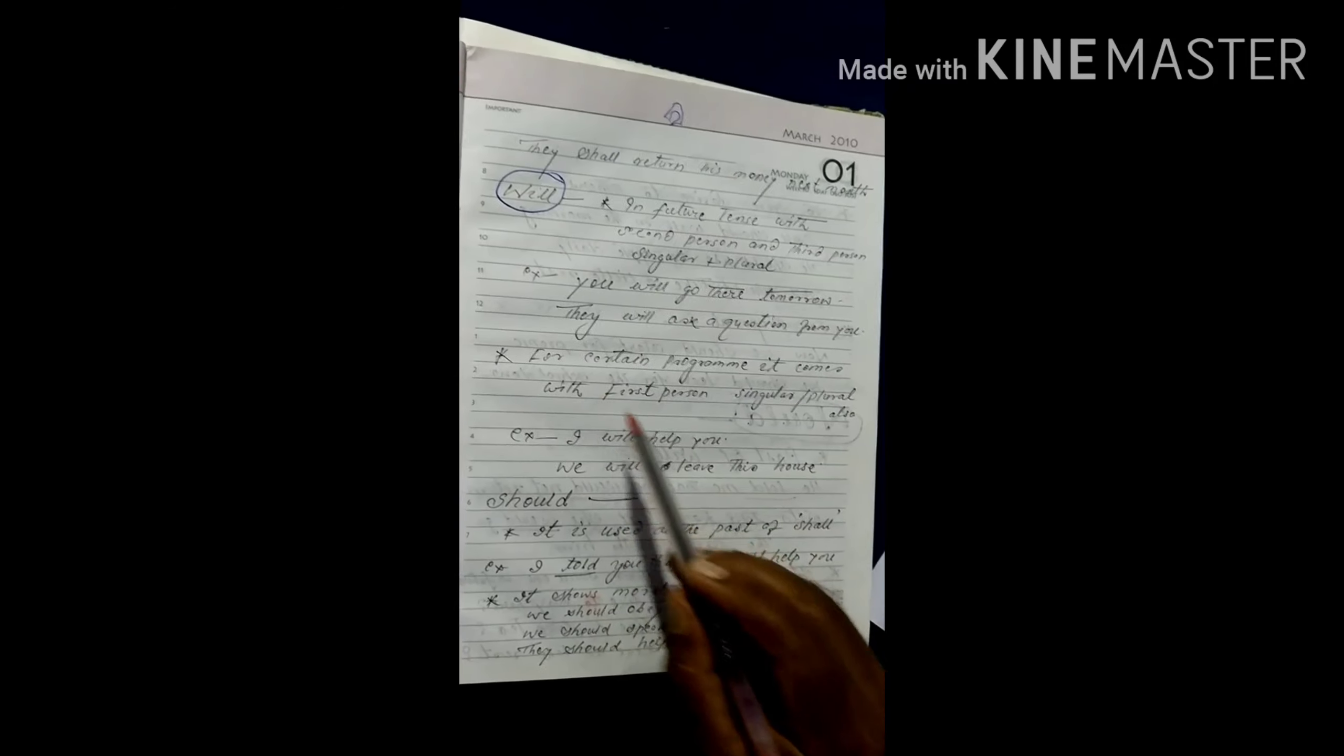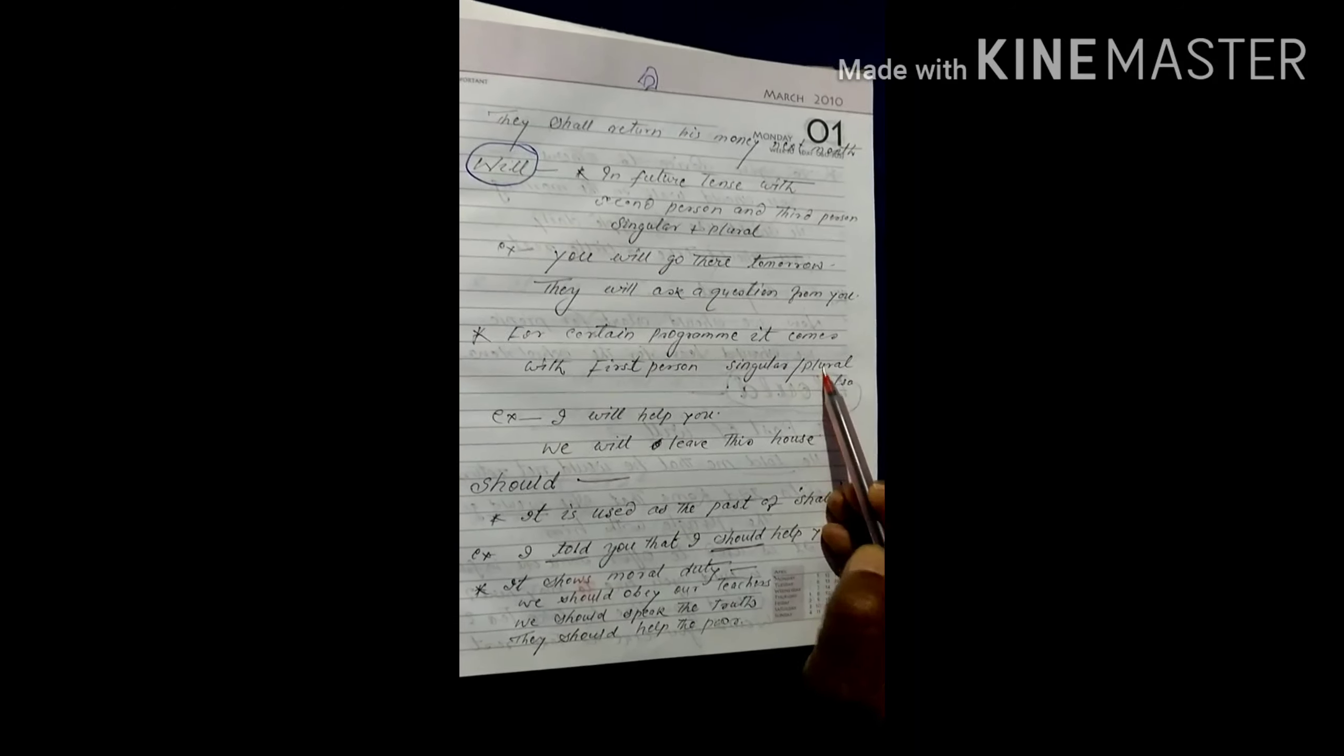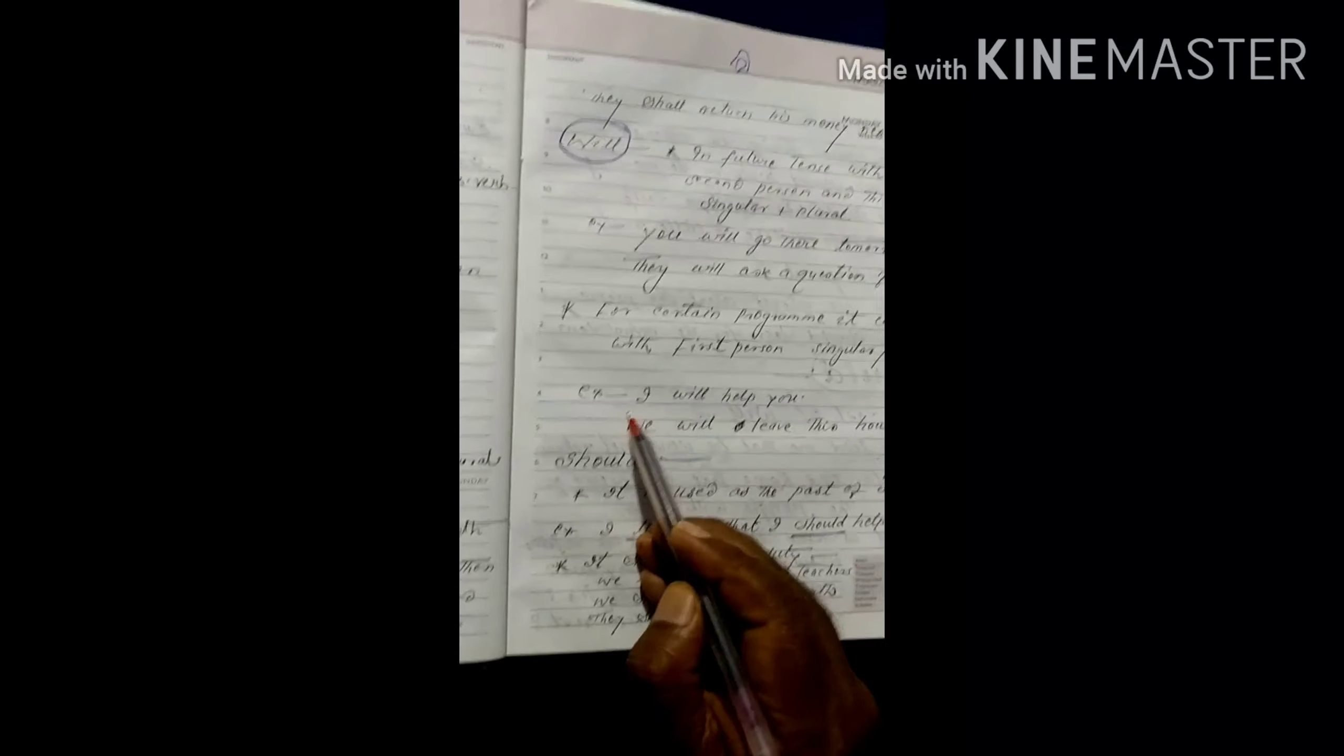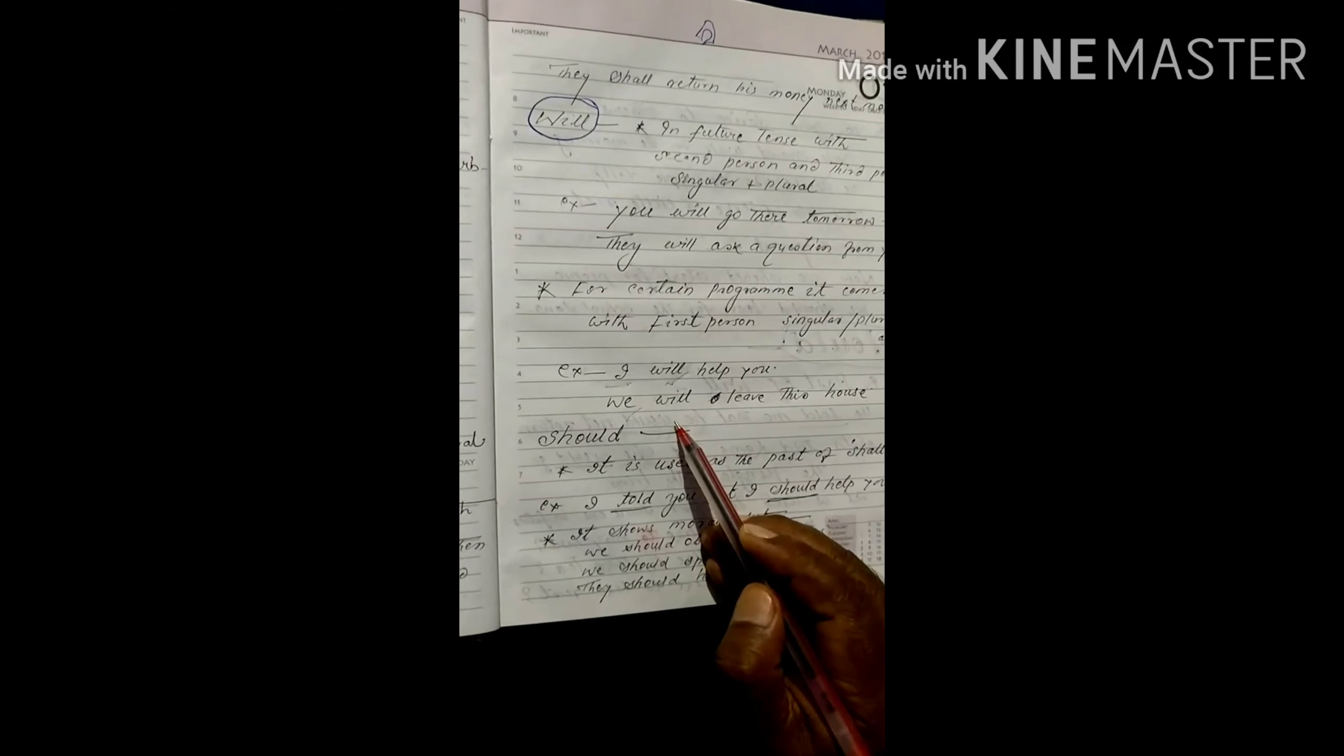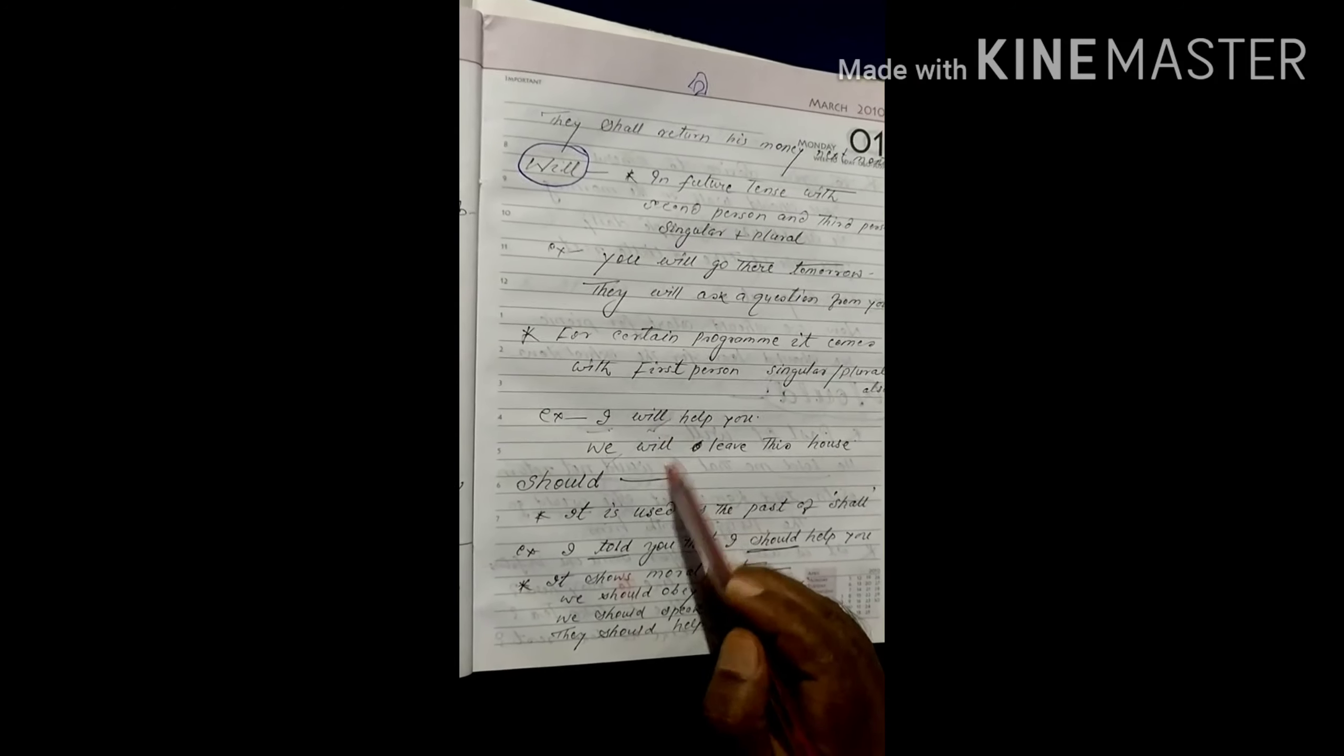But, adversely, in a special case, when we want to show the certain duty, then in spite of second person and third person, we can use it with first person singular and plural also. For example, you can see here, I will help you. Here is first person I, and will shows certain work. In the same way, we will leave this house. Here is determination also. In common case, for I and we, we have to use shall. But, in a special case, to show the determined work, we use will in both cases.